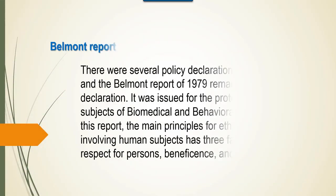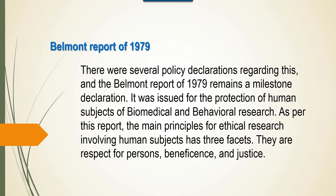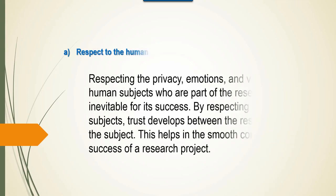There were several policy declarations regarding this, and the Belmont Report of 1979 remains a milestone declaration. It was issued for the protection of human subjects of biomedical and behavioral research. As per this report, the main principles of ethical research involving human subjects has three facets: respect for persons, beneficence, and justice.